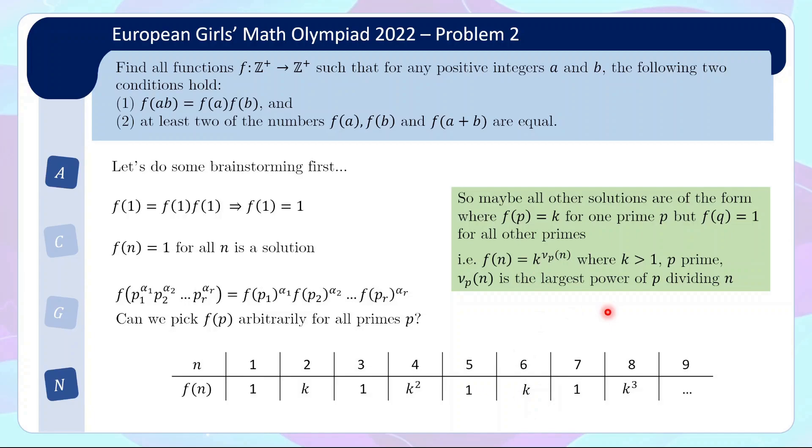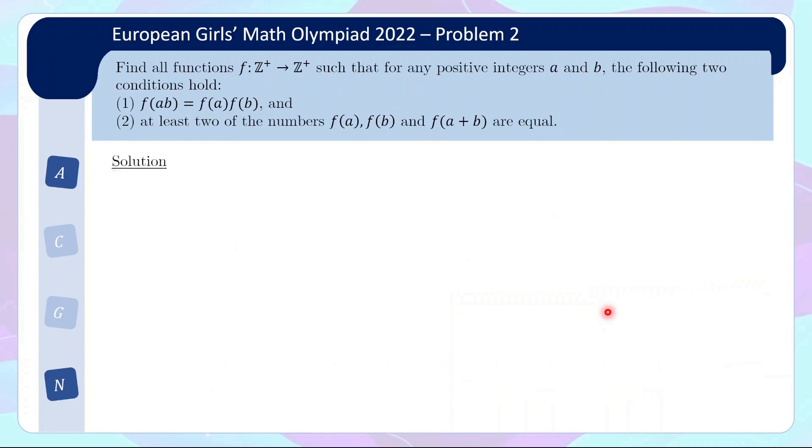So I think we got pretty much all of the inspiration that we need to actually sit down to write the solution properly. So firstly, you recall f(1) is 1, and then what we want to claim is that the solutions are either f(n) equals 1 for all n, or you get the choice of special prime p, f(n) equals k to the power of v_p(n).